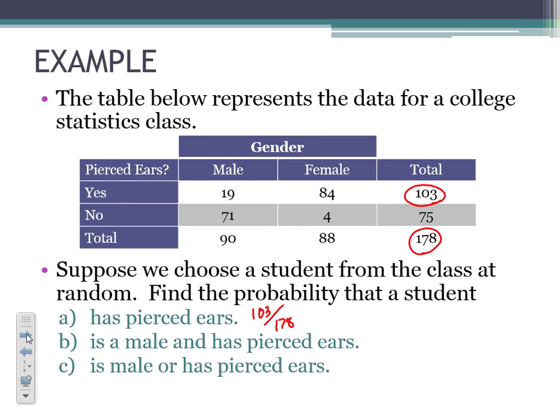Now let's find the probability that the student is male and has pierced ears. Instead of working in the totals, we're getting to a more specific breakdown of those categorical variables. We want the student to be male and have their ears pierced. That's 19 people located in our table. Again, we put that out of the total of 178, so our probability would be 19 over 178.